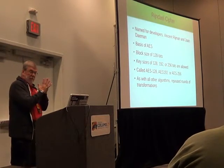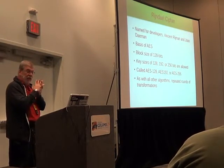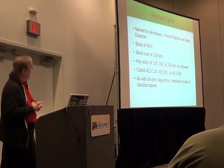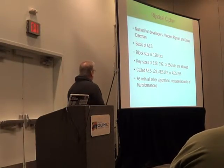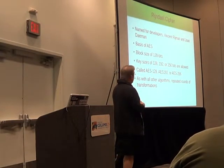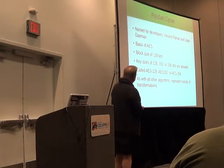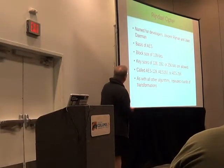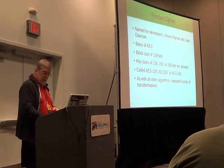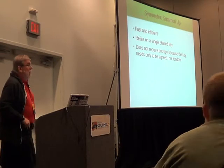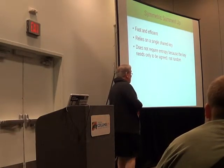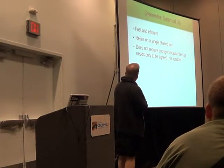Then there's Rijndael — I'm told that's the pronunciation — based on the names of people from the Netherlands, and that's the basis of AES. The block size here is 128 bits. The key size could be any of three options, so if you see AES-256, the key size is 256 bits while the block size is still 128. Again, you do all the repeated rounds. All of these are symmetric — a lot of XOR blocks — and a single shared key. Note that we haven't had to talk about randomness here, because the question is simply: do we agree on what the key is?